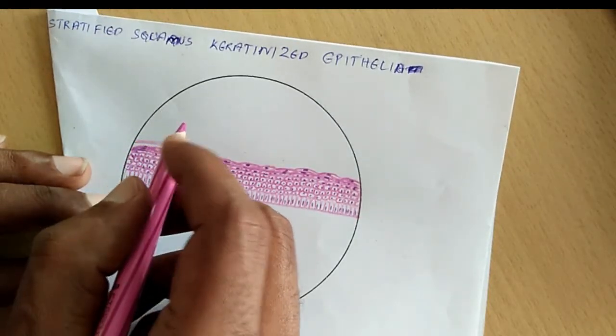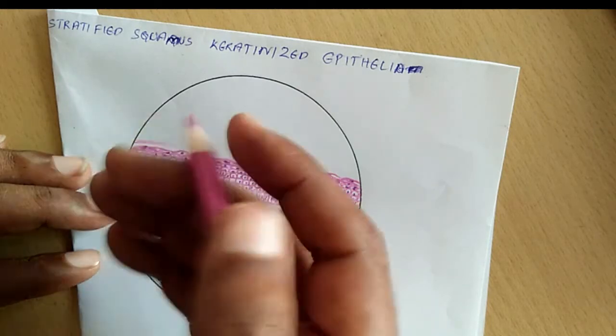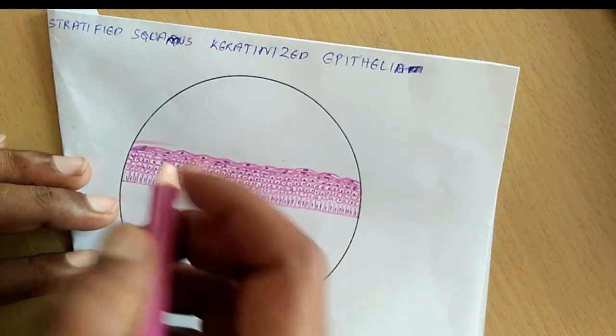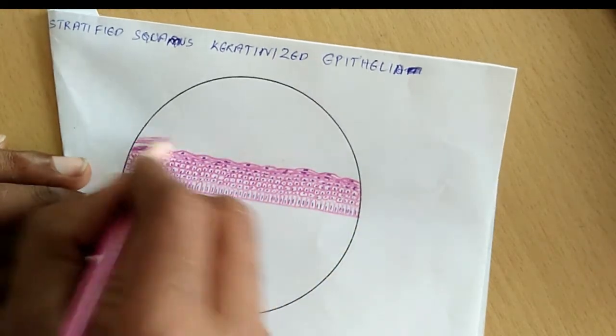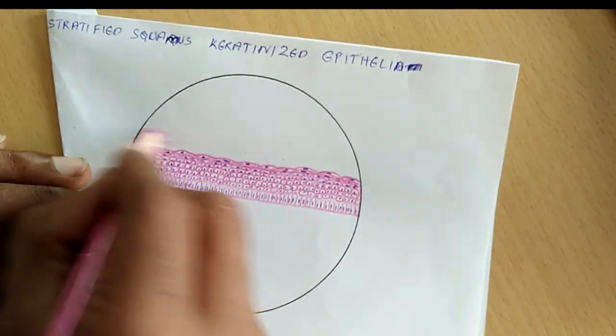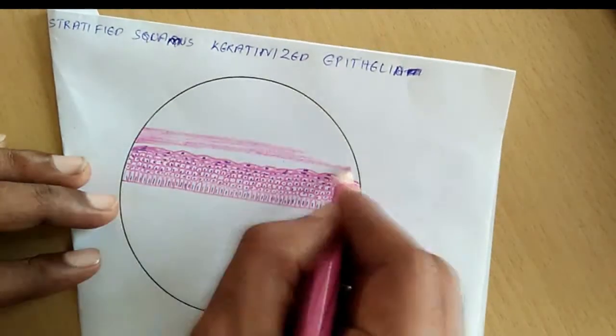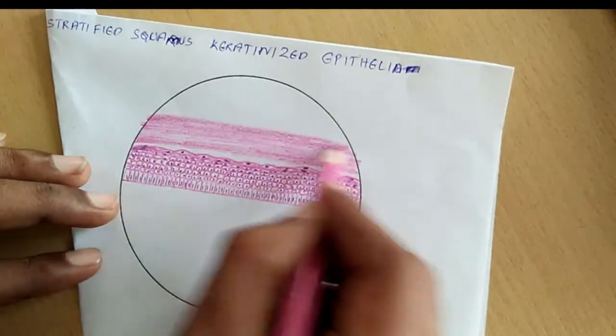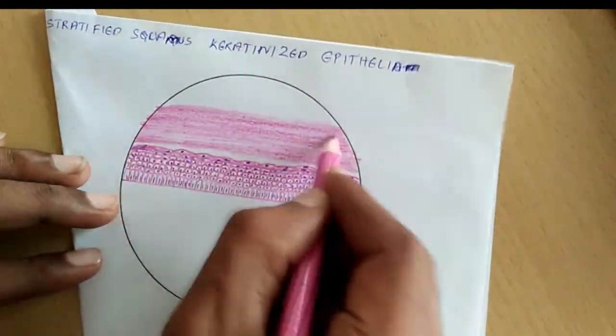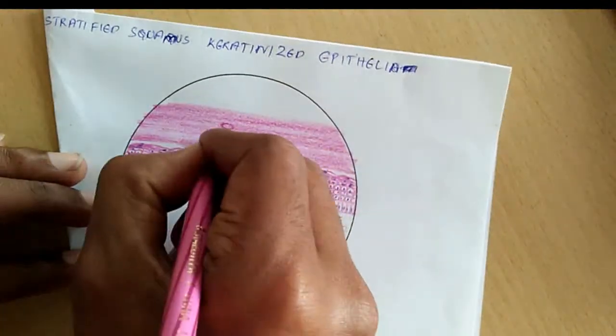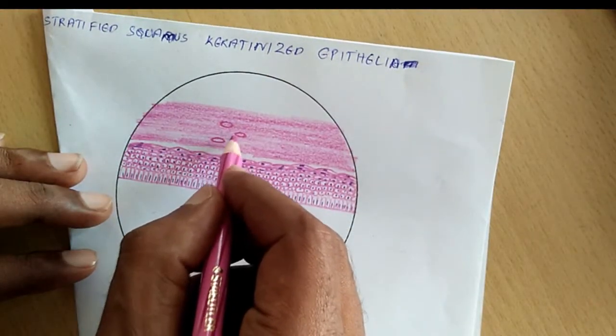Now I'm drawing the keratinized epithelium, so I'm drawing the keratin here, or the stratum corneum. These are ducts of sweat glands.